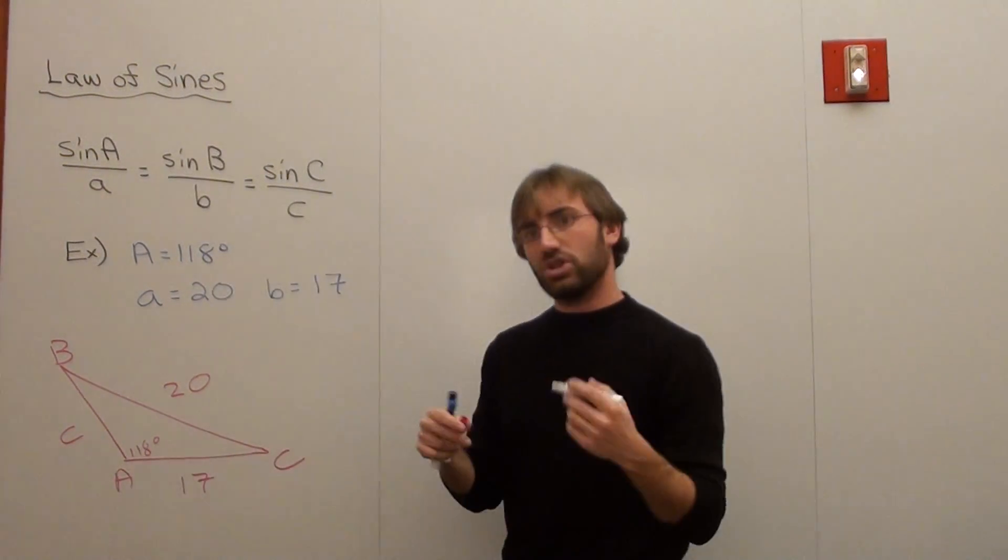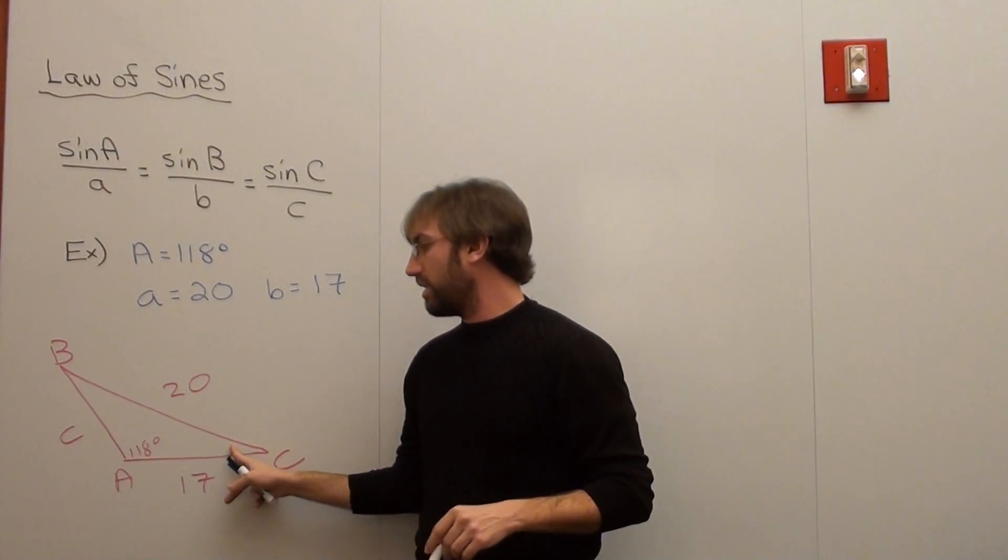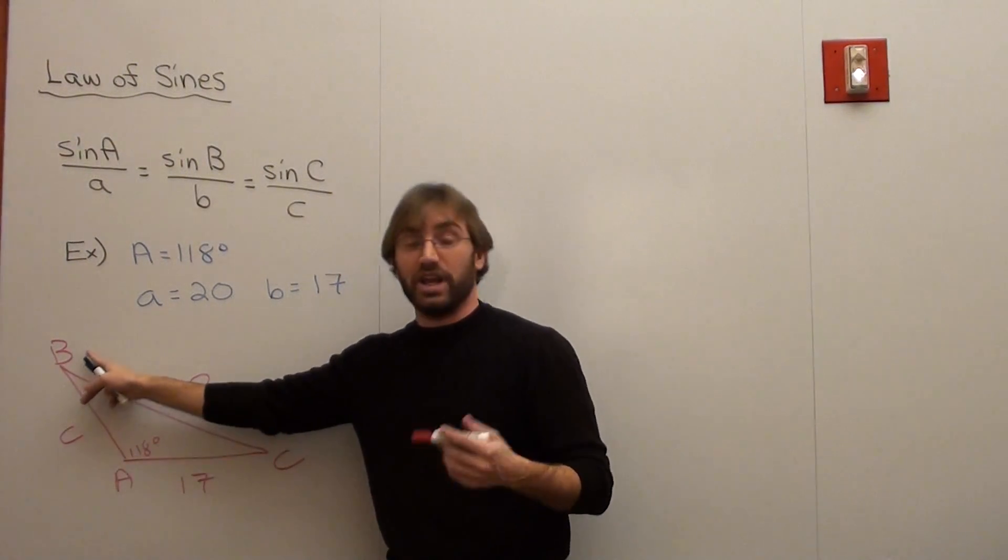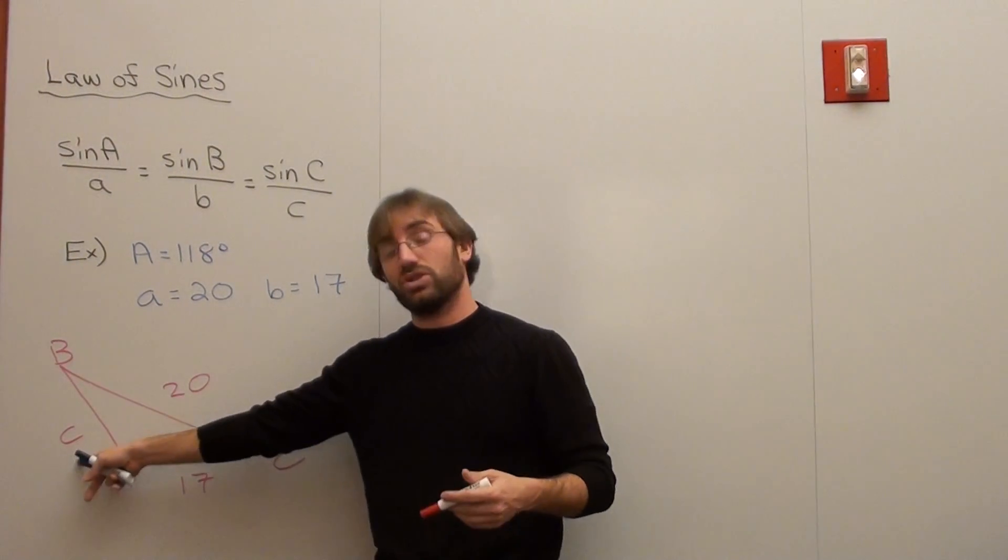Which one's B and which one's C? You know, it really doesn't matter. You can call this one B or you can call this one B. But if I'm going to choose, I'm just going to say, let's make this B, which means this is C. It doesn't have to be perfect. B is 17 and C, I don't know. And I basically need to solve for everything. I need to solve for angle B and angle C, and I need to solve for my side C.